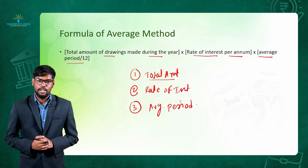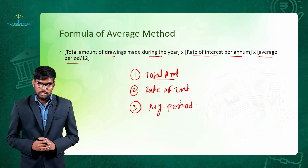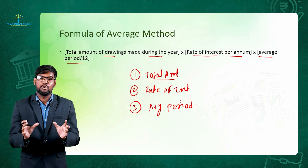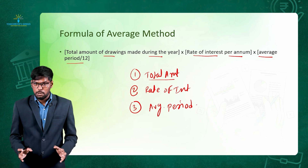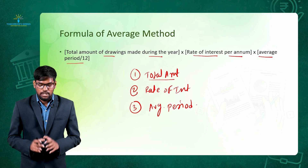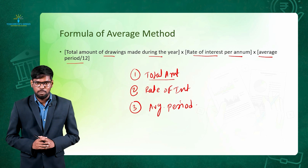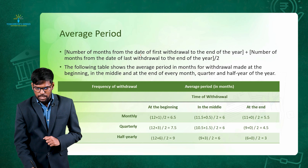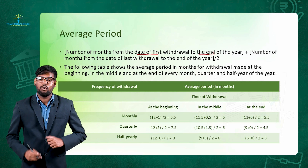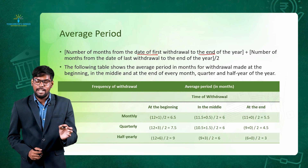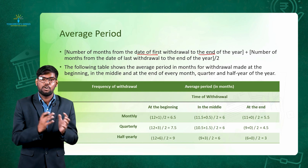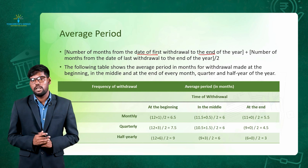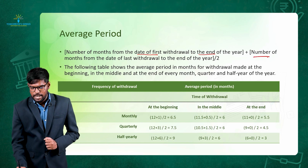Now let's see how to calculate the average period. The average period is the number of months from the date of the first withdrawal to the end of the year. We consider the date on which the partner first withdraws money from the business in a particular accounting year, and then we look at the number of months from the date of the last withdrawal to the end of the year.